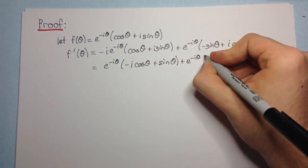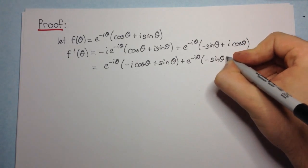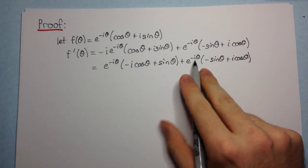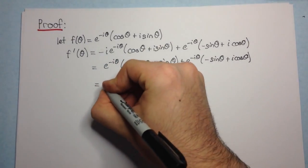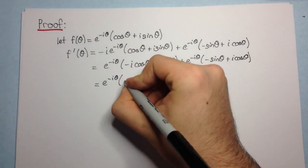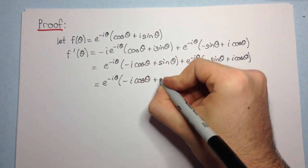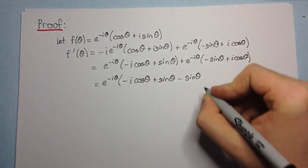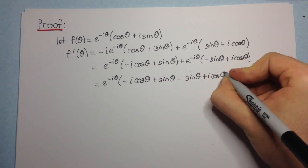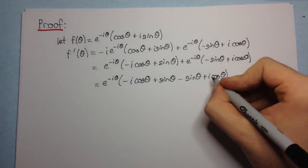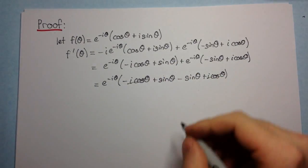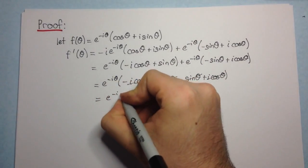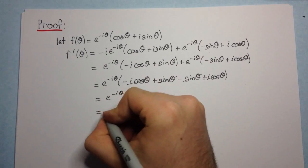Plus e to the negative i theta, minus sin theta, plus i cos theta. Okay, now we can factor out the e to the negative i theta. And we get minus i cos theta plus sin theta minus sin theta plus i cos theta. Okay, now you'll notice that this i cos theta cancels with the minus i cos theta. And the minus sin theta cancels with the sin theta. And so we're left with e to the negative i theta times zero, which is simply zero.